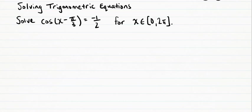So here we're solving the equation cosine of x minus pi over 3 equals negative one half. The ratio is already isolated.